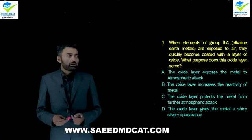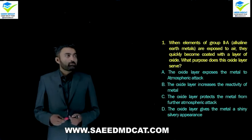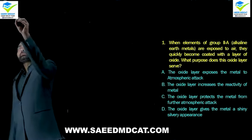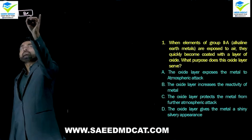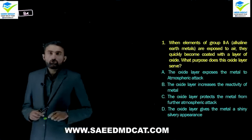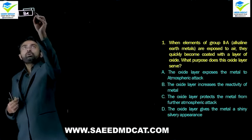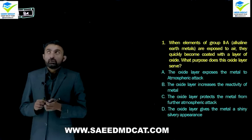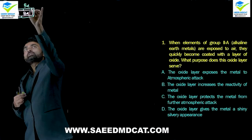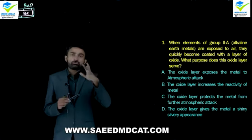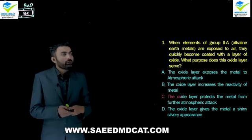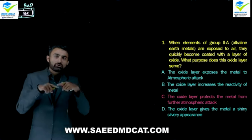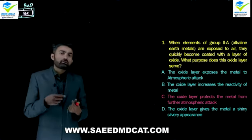Question 1: When elements of group 2A (alkaline earth metals) are exposed to air, they quickly become coated with a layer of oxide. What purpose does this oxide layer serve? If you have beryllium, due to air oxidation a very thin coating of beryllium oxide forms on it. This coating serves the purpose of protecting the surface of beryllium, so further oxidation stops. The oxide layer protects the metal from further atmospheric attack because the coating of alkaline earth metals is very compact with no free space for further oxygen attack.